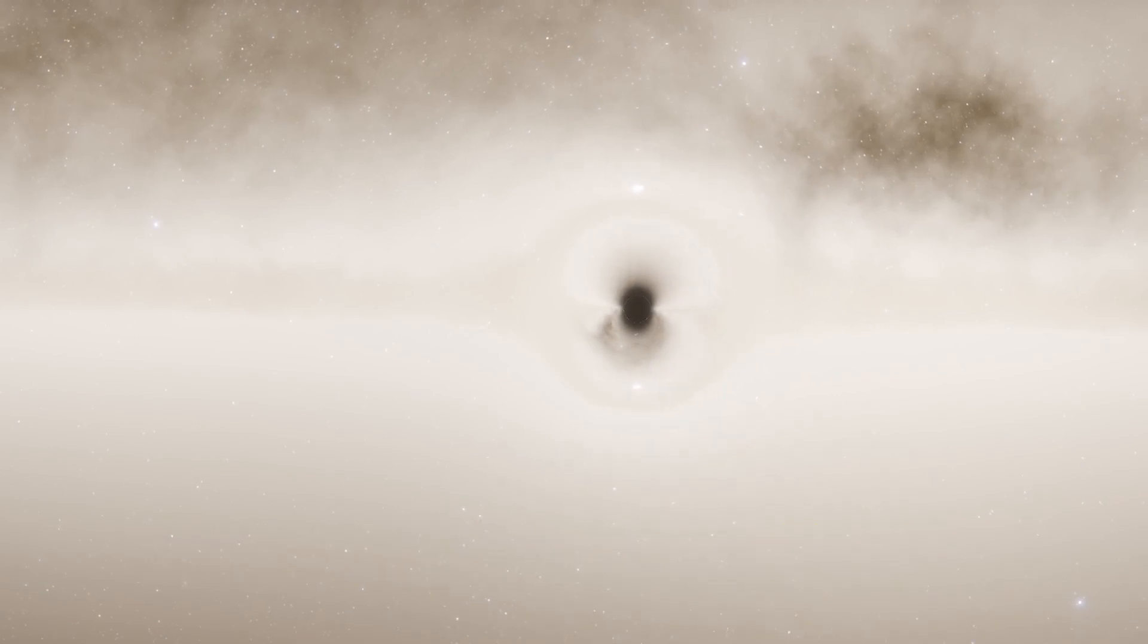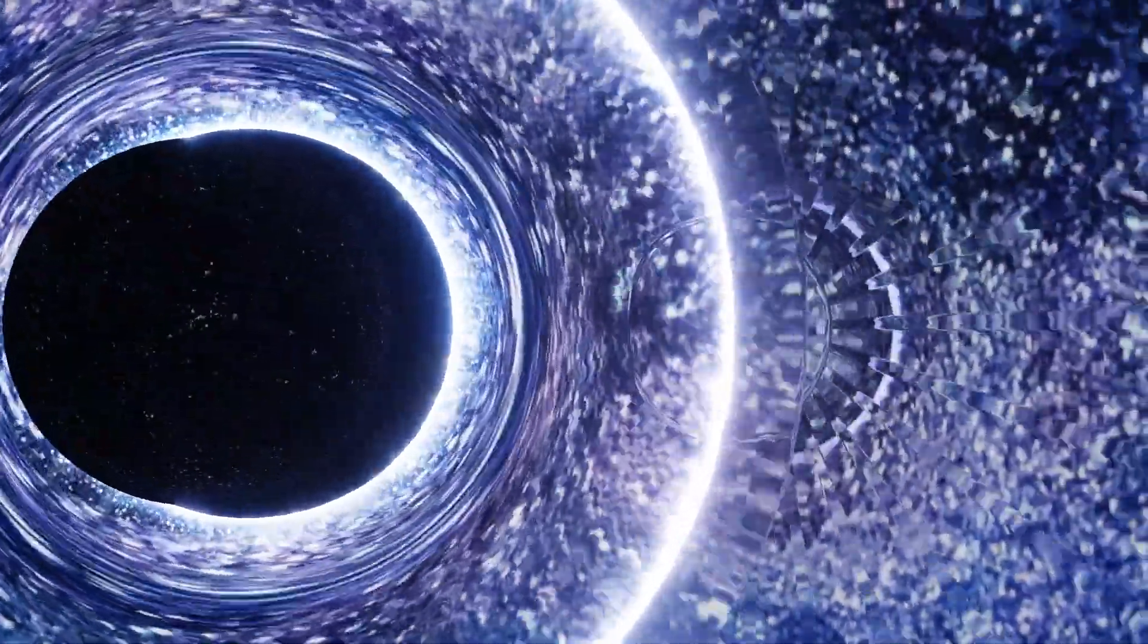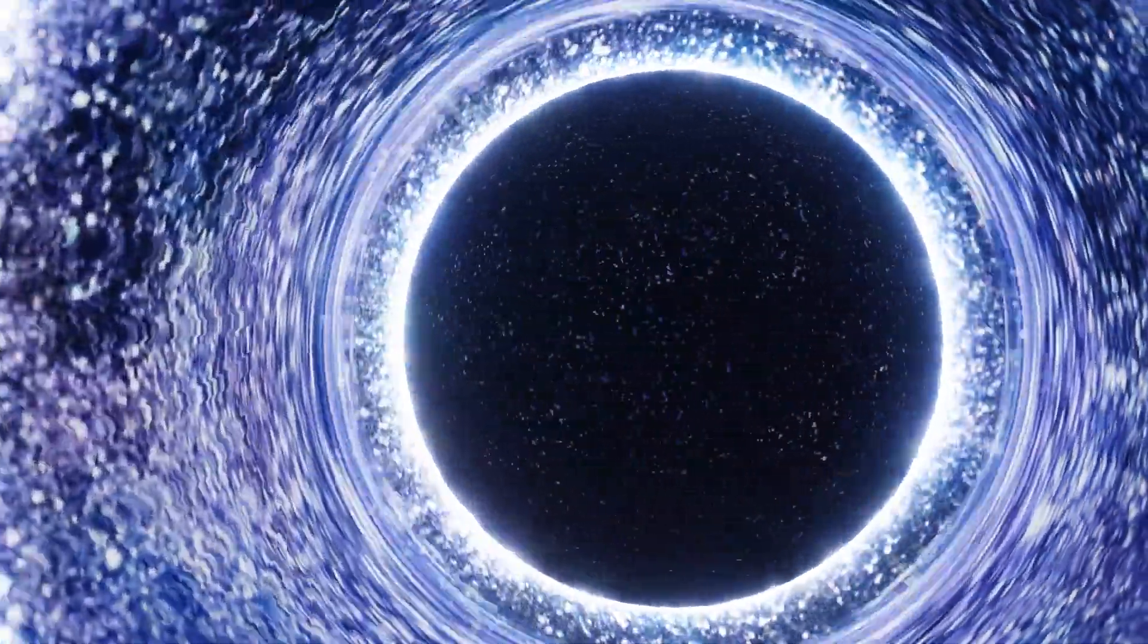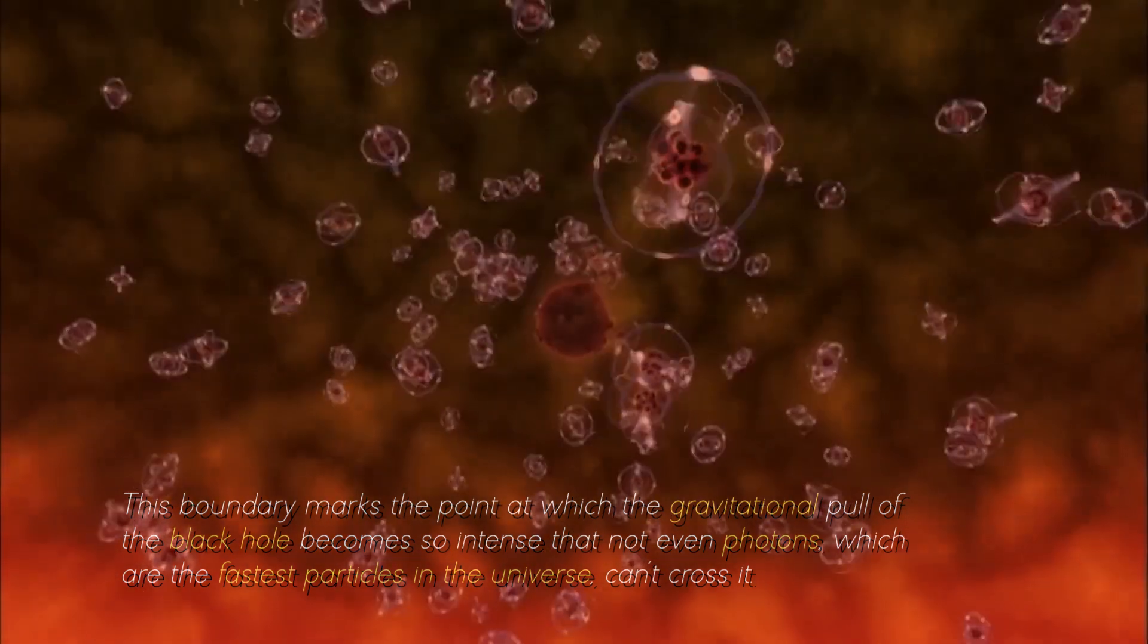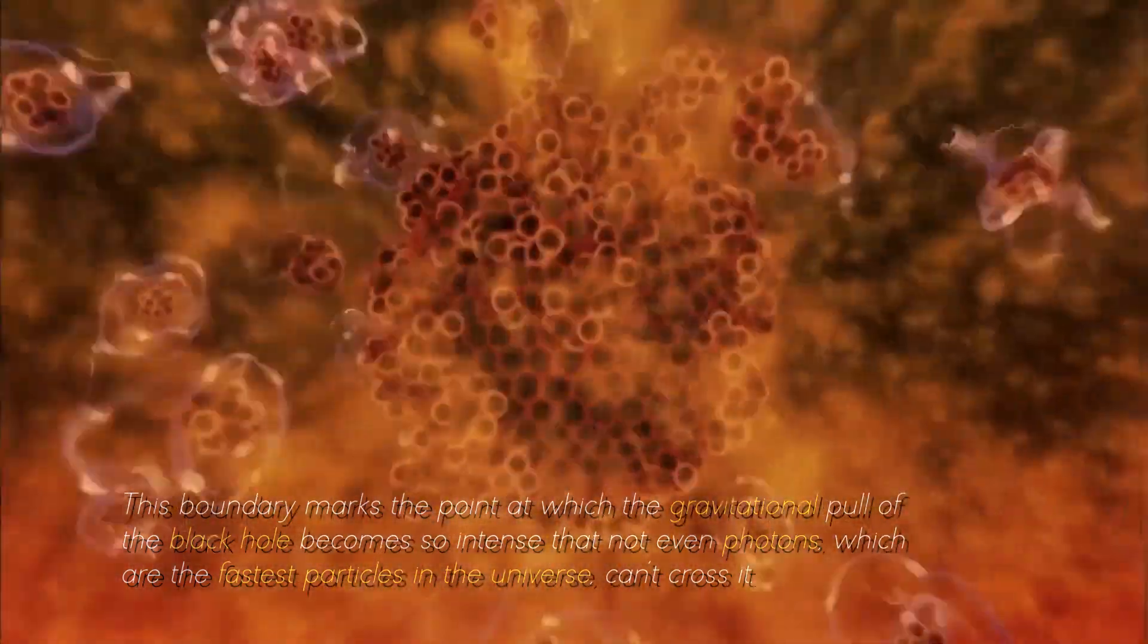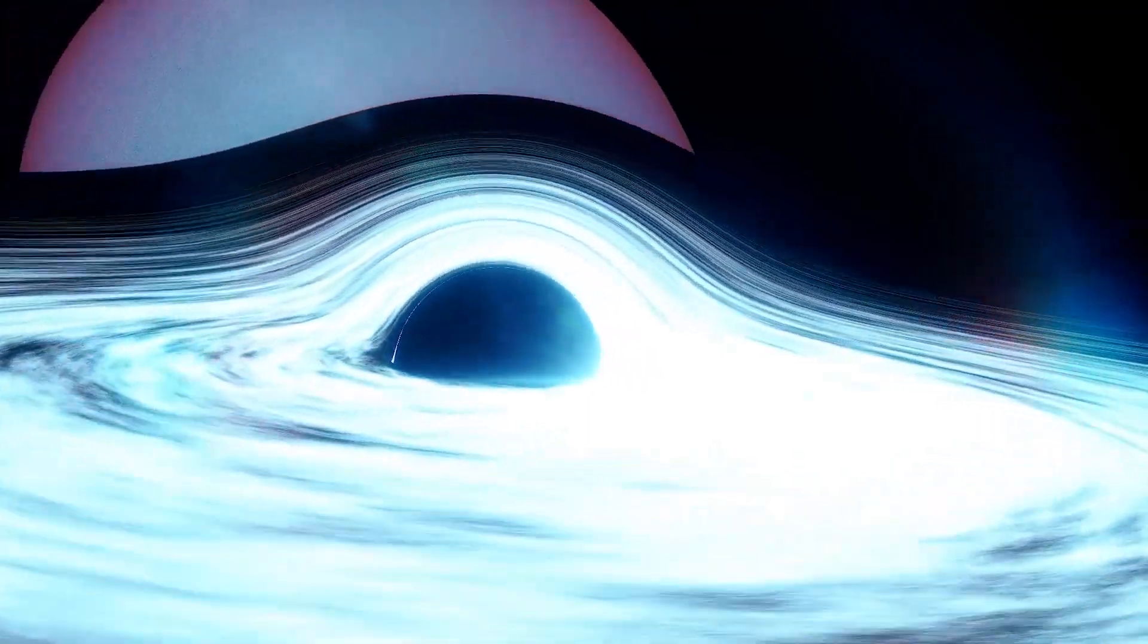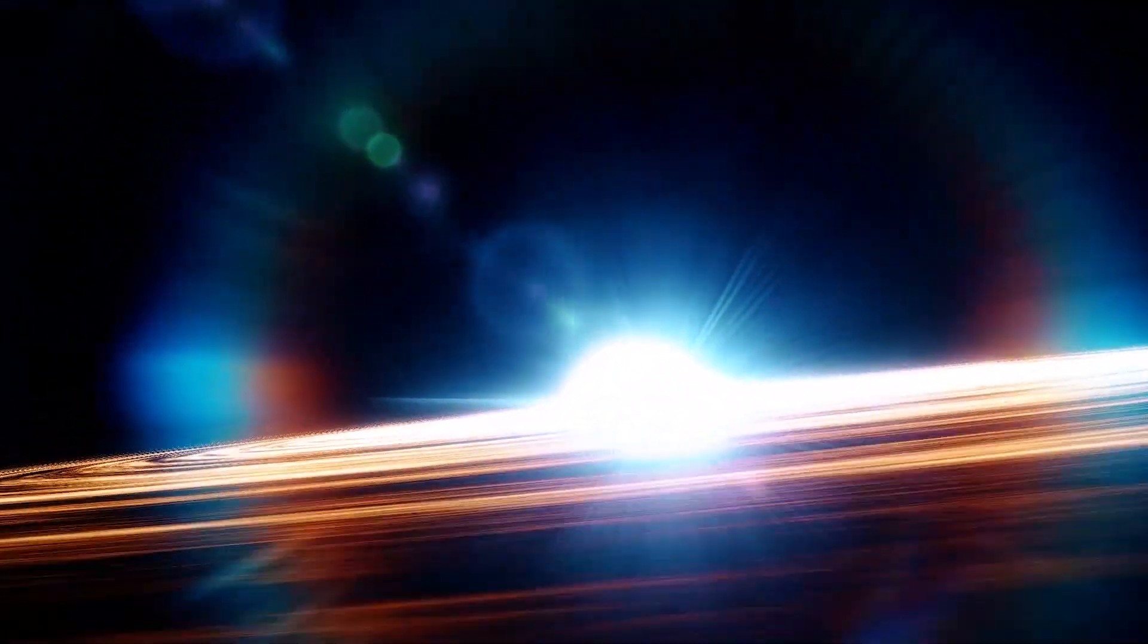This finding defies the conventional understanding of how black holes work. A fundamental characteristic of a black hole is its event horizon, an invisible boundary beyond which escape becomes impossible, even for light. This boundary marks the point at which the gravitational pull of the black hole becomes so intense that not even photons, which are the fastest particles in the universe, can cross it. Any object or radiation that crosses the threshold is inexorably pulled toward the singularity at the heart of the black hole, a destination of no return.